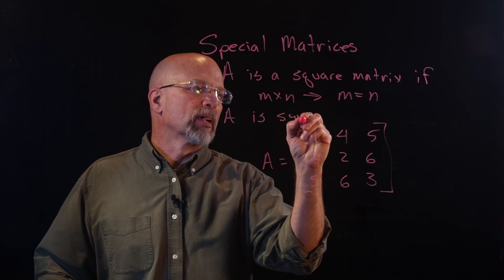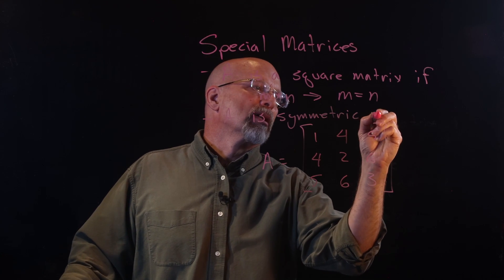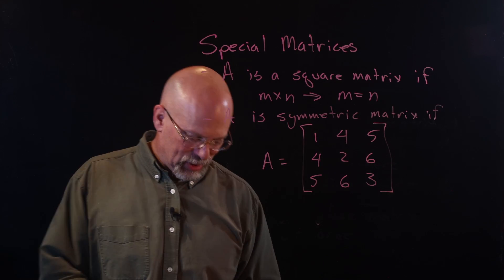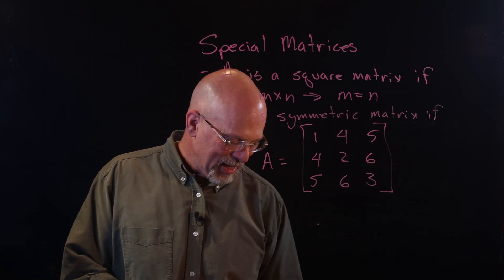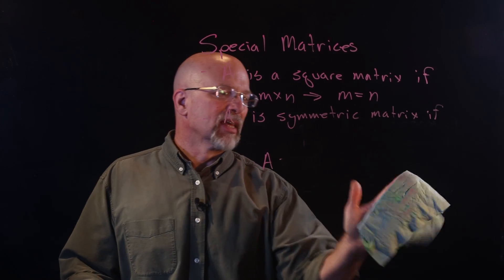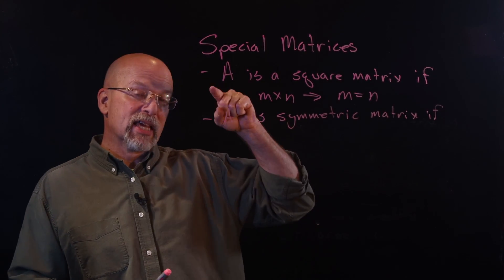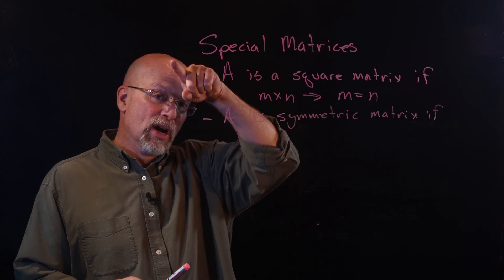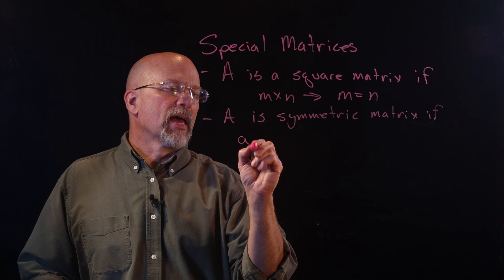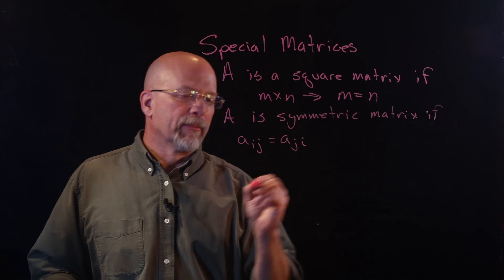A is a symmetric matrix if, across the diagonal — and when I say diagonal I'm talking about from the upper left corner down to the lower right-hand corner — A sub i,j is equal to A sub j,i.